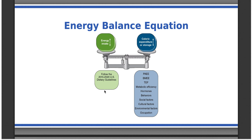The other part of the equation is caloric expenditure or storage. You have to take into account things like exercise and your basal metabolic rate — the fact that your body burns calories just sitting here being alive. There are other things that affect caloric expenditure that we don't think about as much: our behaviors, occupation, environmental factors, whether we can go outside, cultural factors, social factors, and our emotions.